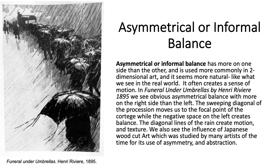Asymmetrical or informal balance has more on one side of the axis than the other, and it's used more commonly in two-dimensional art because it seems more natural — more like what we see in the real world. It creates a sense of motion. In Funeral Under Umbrellas by Henri Rivière in 1895, we see obvious asymmetrical balance, with more on the right side than the left. The sweeping diagonal of the procession moves us up to the focal point of the cortege, with the negative space on the left creating balance, as well as the diagonal lines of the rain. We also see the influence of Japanese woodcut art, which was studied by many artists of the time for its use of asymmetry and abstraction.